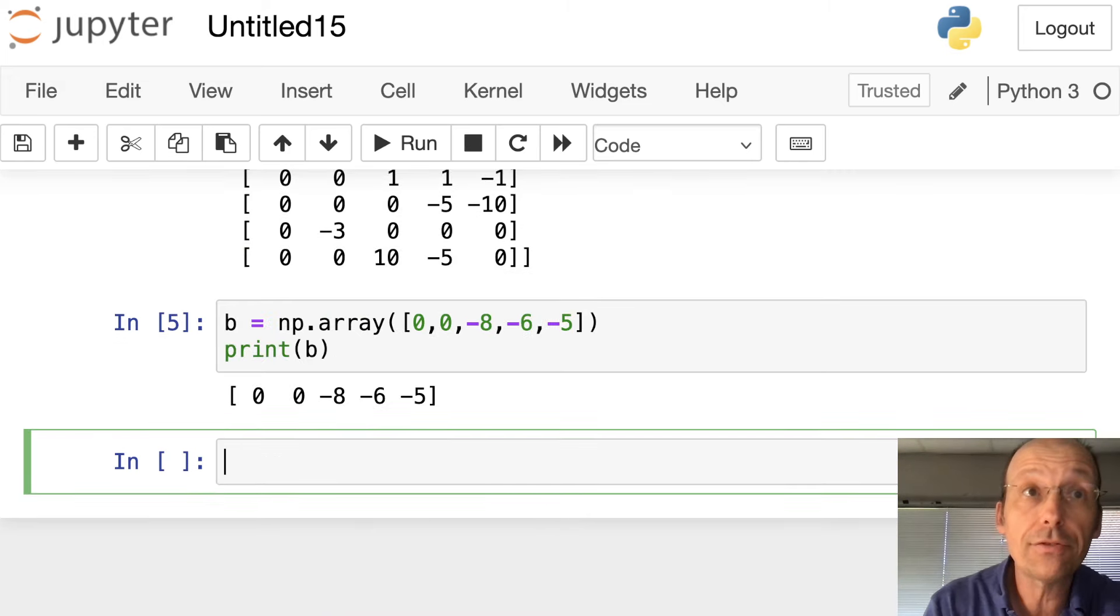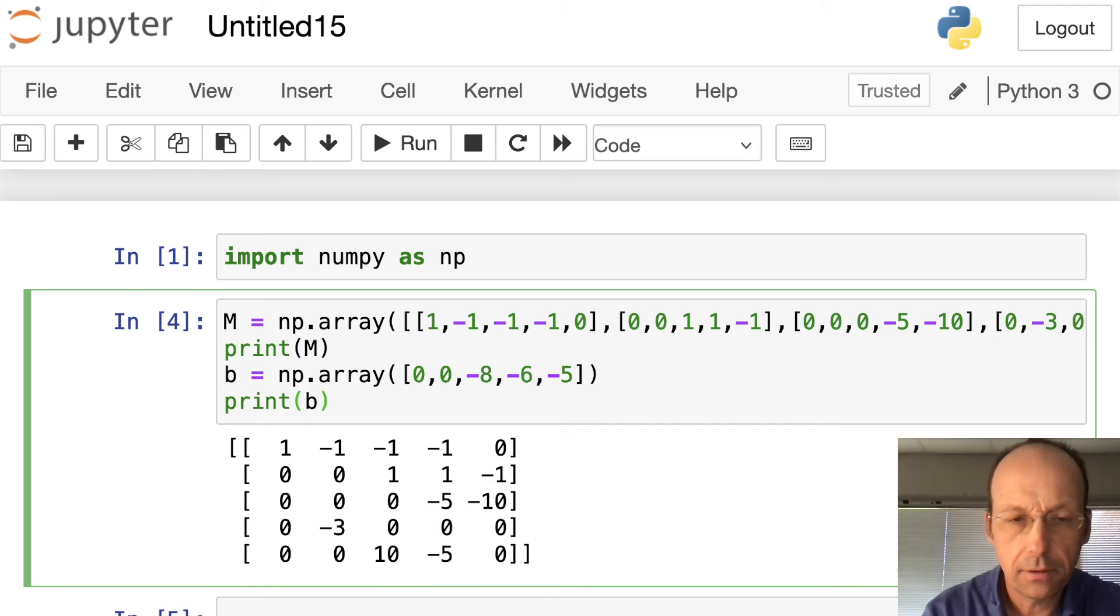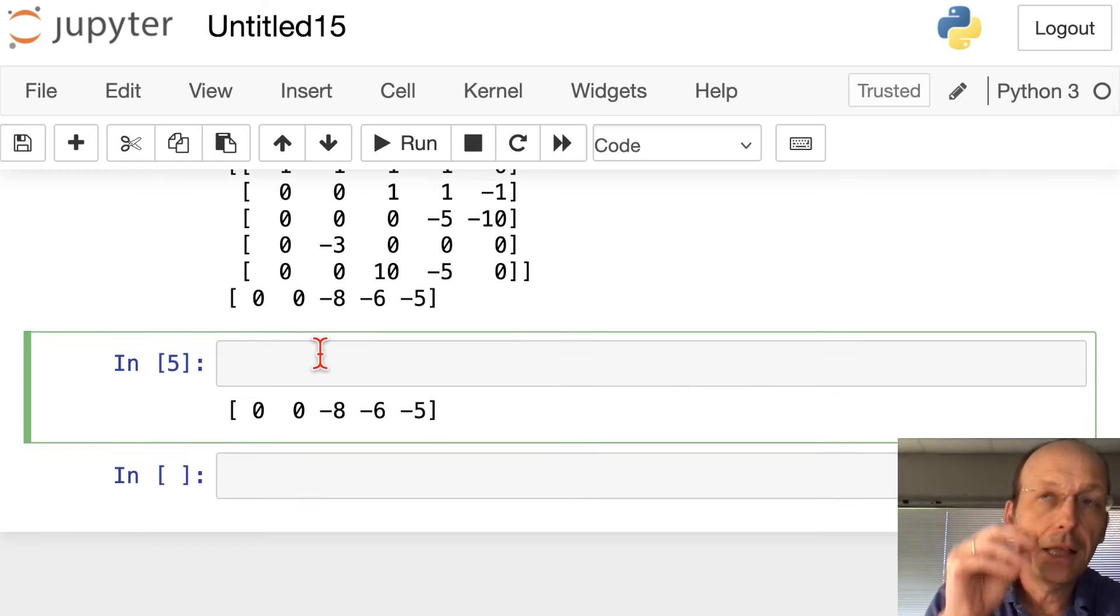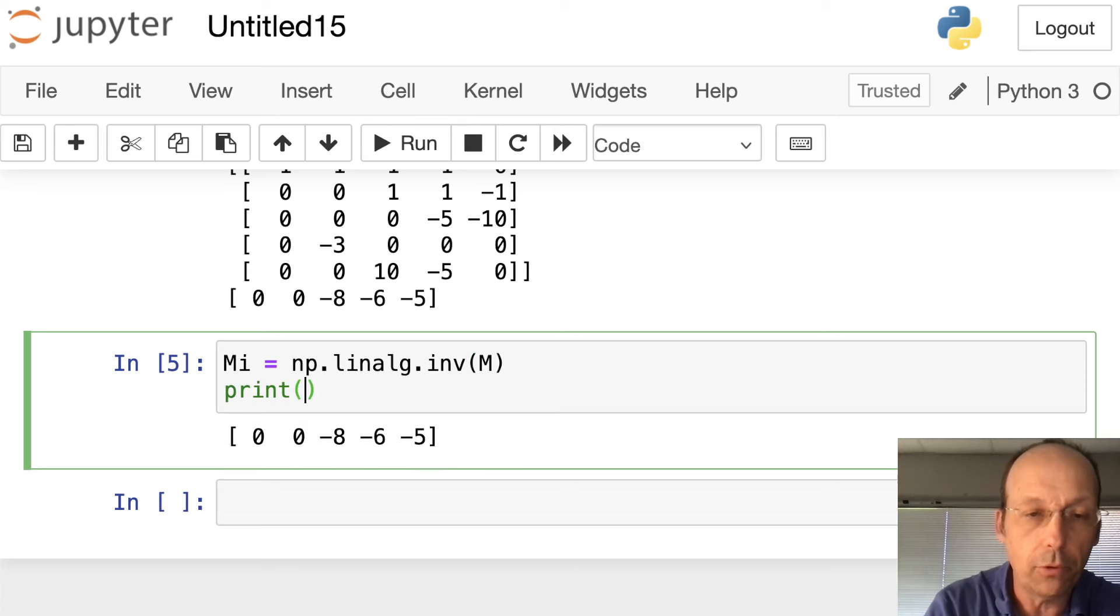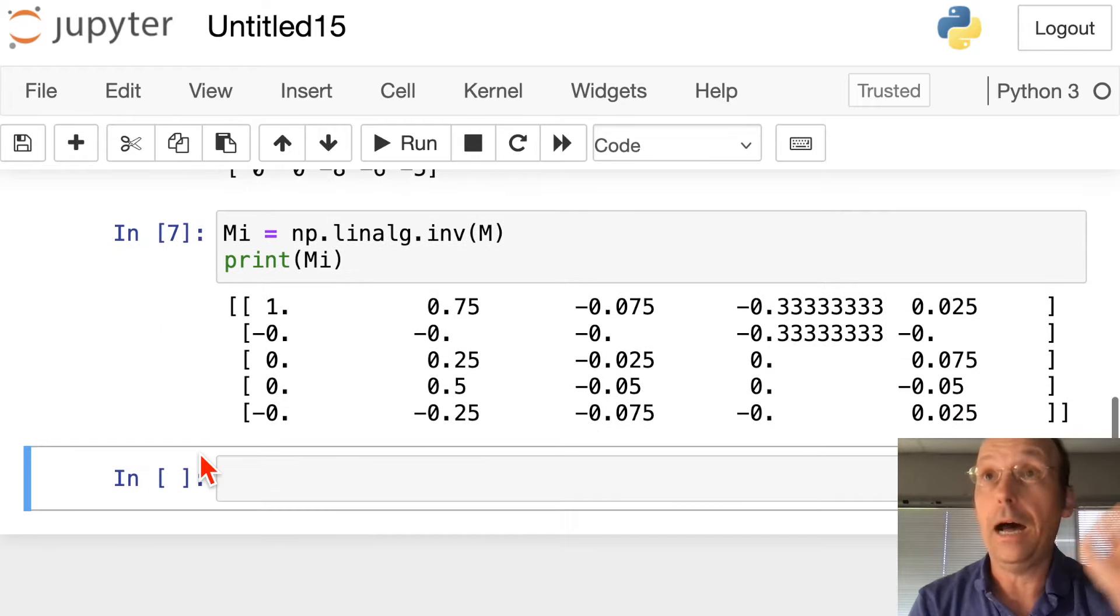Now, I'm going to find the inverse of the matrix M. So to do that, there's a linear algebra feature. Actually, let's put this up here. Control X. Let's put it up here. There, now they're together. And I'm going to define this as a matrix. I'm going to call it MI. MI is the inverse of the matrix. And you don't have to do this, but I'm doing it just for understanding. It's going to be NP dot linear algebra, which is linalg dot inverse inv, and then the matrix I want. And, of course, you know I'm going to print it just to see if it looks legitimate. Okay. I don't know that that's actually the inverse because I'm not going to do the inverse. You shouldn't do the inverse. No one should do the inverse of a 5 by 5.